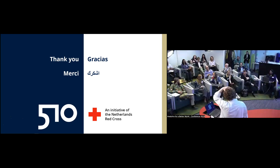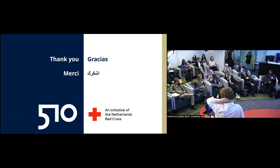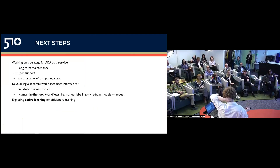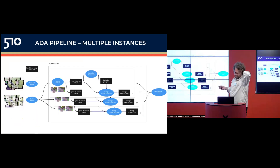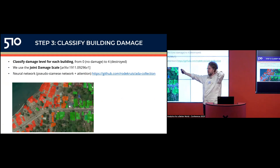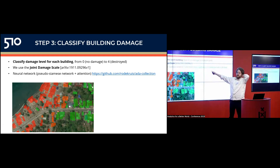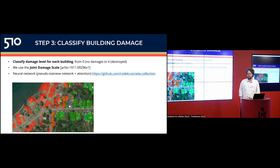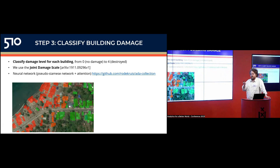Audience question: Are there international guidelines for the damage classification, and how was the training dataset labeled? The damage scale we use is the Joint Damage Scale — it's not something we came up with ourselves; it's widely used. For every damage level it provides a detailed description of what the damage would look like. Our label data also uses this scale, so it was already established. You can look it up.